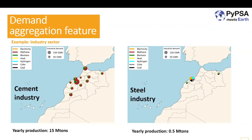Another important feature is demand aggregation. Demand is really crucial to the model, and especially the industry sector is difficult to get detailed spatial demand for. We found a database with different industrial plants — for example cement and steel industries — and we can cluster them by GADM region, then specify in which region what demand comes from which industry sector.